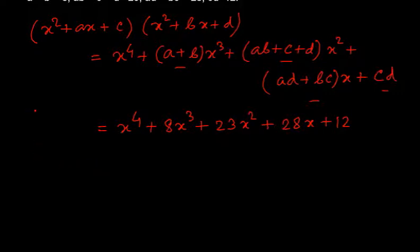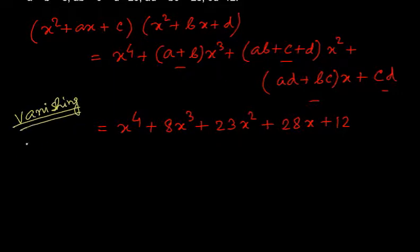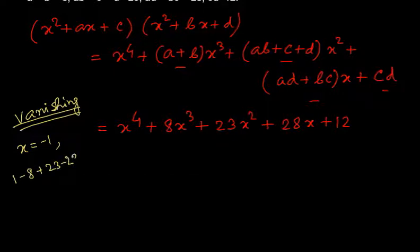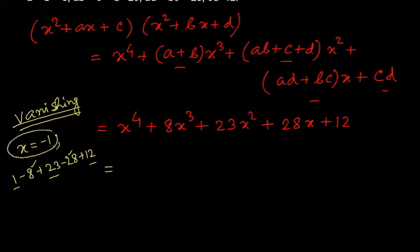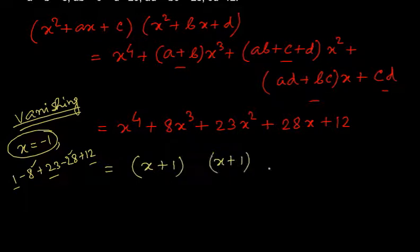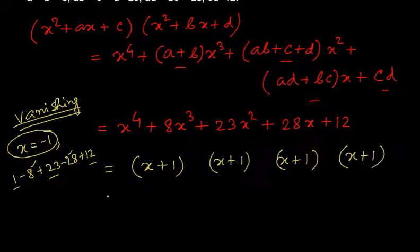So we need to factorize this into two quadratic expressions. For that we can use the vanishing method, as I told you in the last video. According to the vanishing method, you can check that X equal to minus 1 is going to satisfy the equation. If you substitute X = −1, you get 1 − 8 + 23 − 28 + 12. The positive terms give 36 and the negative terms give 36, so the result is 0. So X plus 1 is a factor.